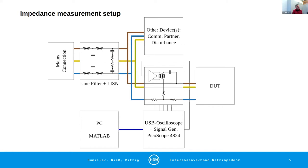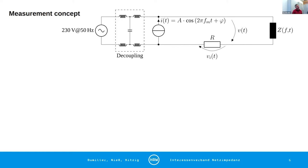Then we have in the middle our measurement box with current source and measurement shunts. We measure the voltages over the shunts. We generate signals with a USB oscilloscope and PicoScope, and we control all of it from a PC. We can connect in parallel on line side other devices like communication partners, disturbances, low impedance, or something that affects the device under test.